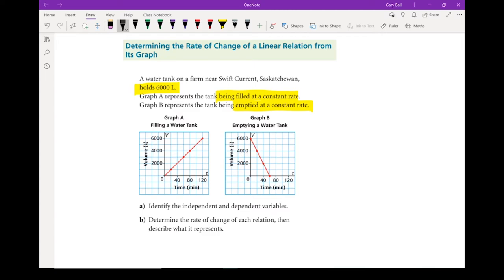It asks us right off the bat to identify the independent and dependent variables. Well, the amount of water in the tank is going to depend on how much time has gone by. Independent variable is always on your x-axis. So this is my independent. And this one is my dependent. Same thing over here. This is my independent. This is my dependent.